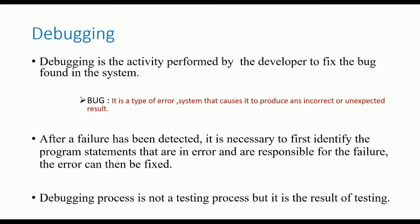After the software is developed, we test it to check whether it works correctly or not. During testing, if we find any errors or bugs, we identify those bugs to repair them. From the start to the identification of a bug is the testing process, but after identifying any bugs or errors, we have to repair them. The repair of that bug is known as debugging.